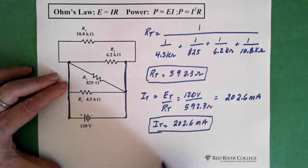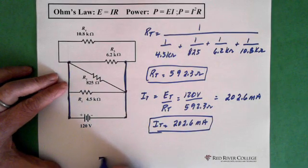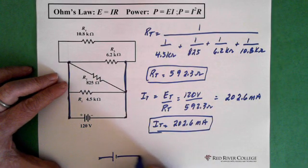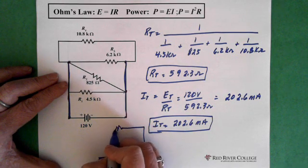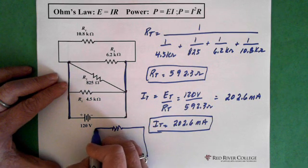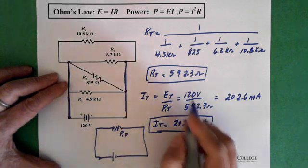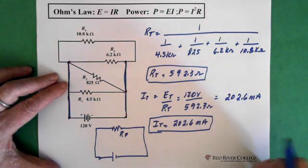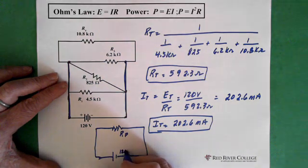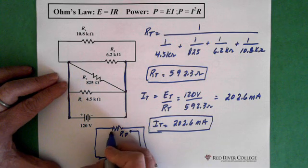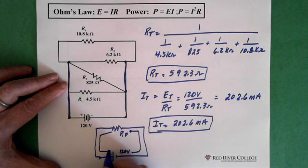Essentially what we could say is this circuit then could be drawn this way. Here's our battery, and all that parallel resistance could be written as one resistor. So this is our parallel, which we just solved for up here, our R total. And here's our 120 volts, and the total current is running through this circuit.